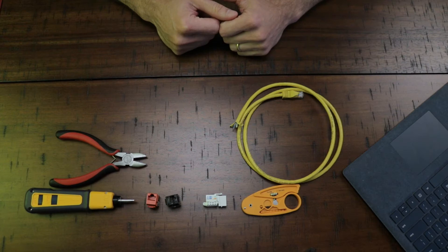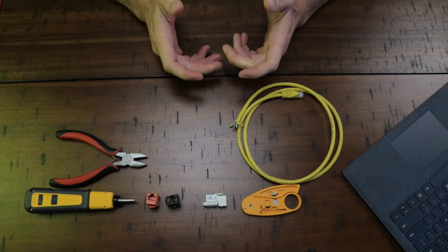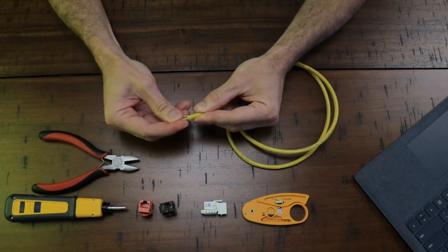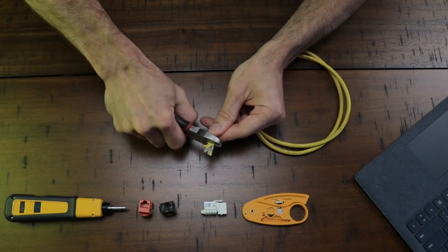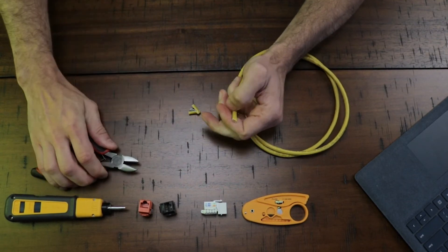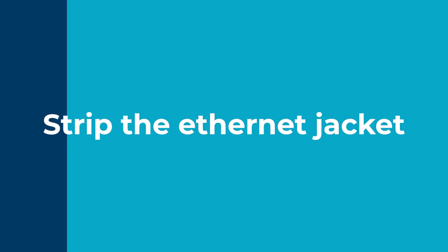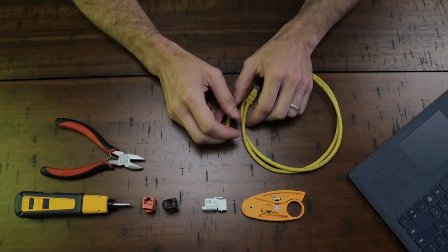The first step is to cut the ethernet cable with a wire cutter. What I want to have here is just a straight cut in this end, and make a straight cut just like that.